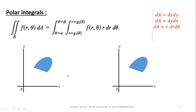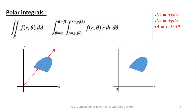Next, we will learn how we can calculate the limits of R. In order to calculate the limits of R, we will pass an arrow from the origin crossing through the region of integration. The boundary through which this arrow enters will give you the lower limit, and the boundary through which this arrow exits will give you the upper limit.